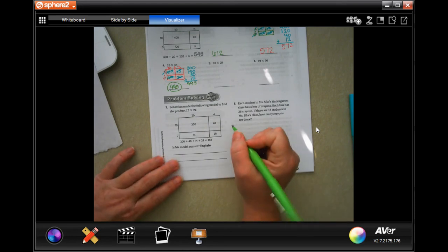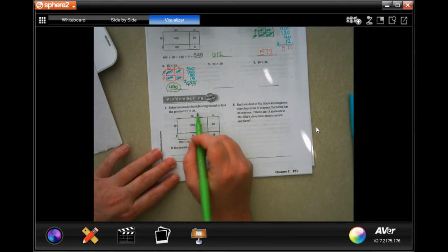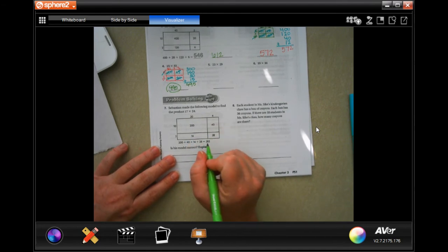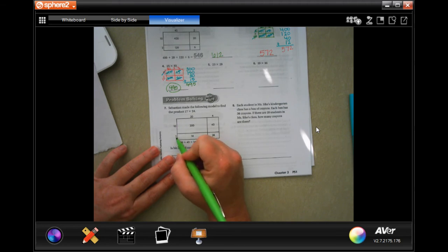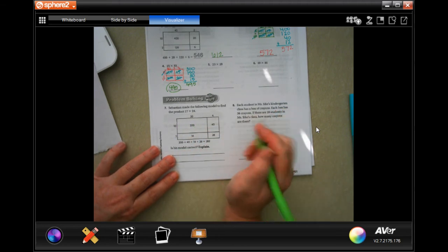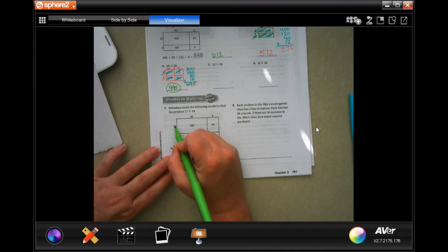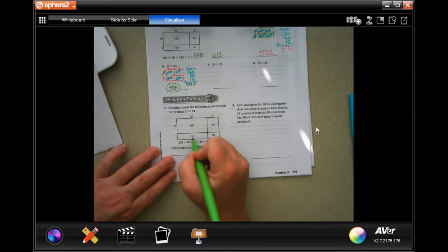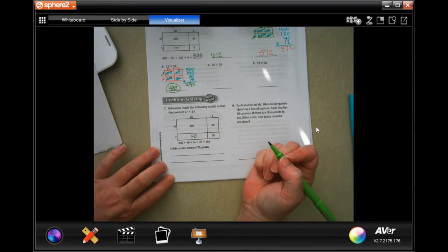So we're going to find Sebastian's mistake. So Sebastian made the following model to find the product of 17 times 24. So we're going to find the problem. Well, 17 is 10 plus 7. And 24 is 20 and 4. So we're good there. 10 times 20 is 200. We're good there. 10 times 4 is 40. We're good there. 7 times 20 would be 7 times 2 is 14. But then I have to add that 0 on. That's where he made his mistake.